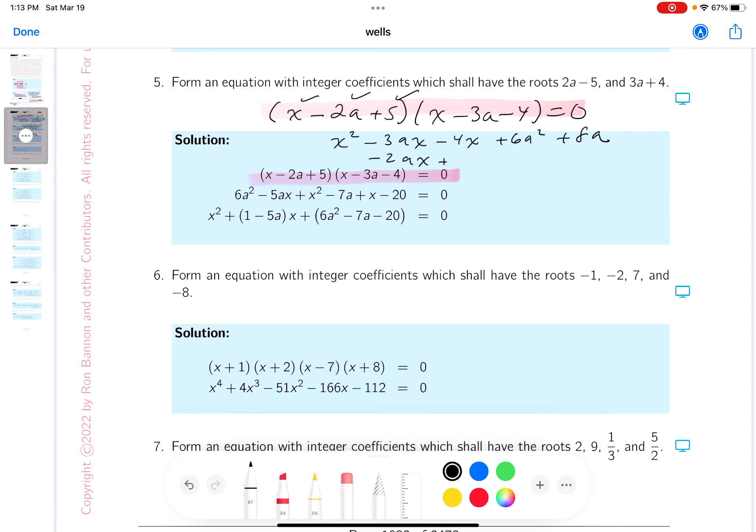What do you get? Plus 5x. Let's see. Then you're going to get minus 15a, and then minus 20, and this equals 0.